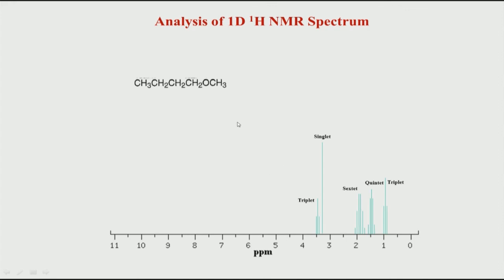In this way, we have now seen three examples of how to analyze peak patterns, multiplicity, and integration, establishing the correspondence between a molecule and its NMR spectrum. However, in all these examples we already had the molecular structural formula — we were doing a one-to-one mapping. Many times in practice we do not know the structure; we only know the molecular composition — how many carbons and hydrogens — and we must deduce the structure from the spectrum. That is what we will take up in the next class.